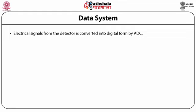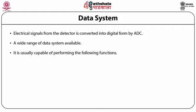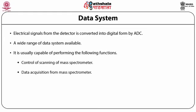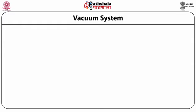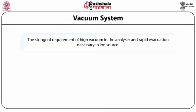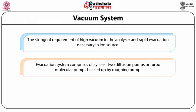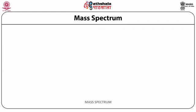The data system: electrical signals from the detector are converted into digital form by an ADC. A wide range of data systems are available, capable of performing control of scanning of the mass spectrometer, data acquisition, and data processing. The mass spectrometer works under a very high vacuum because the ions formed have to travel to the detector, and if the system is not under high vacuum the ions will collide with each other and nothing will be recorded. The evacuation system comprises at least two diffusion pumps or turbomolecular pumps backed up by a roughing pump.